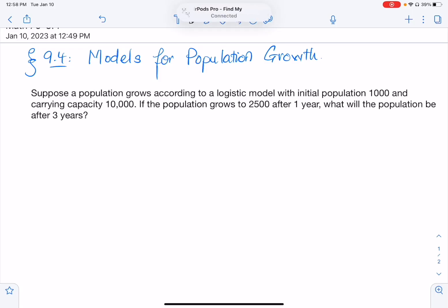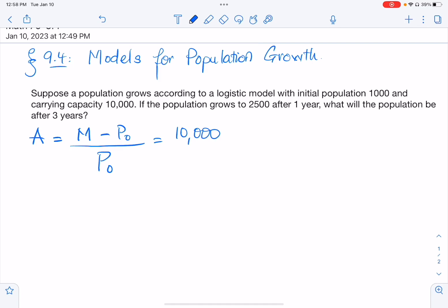So for this problem, we need to use the formula A equals N minus P0 over P0. N is the carrying capacity, so in this case we have N to be 10,000. And P0 is the initial population, which is 1,000 here, over 1,000.